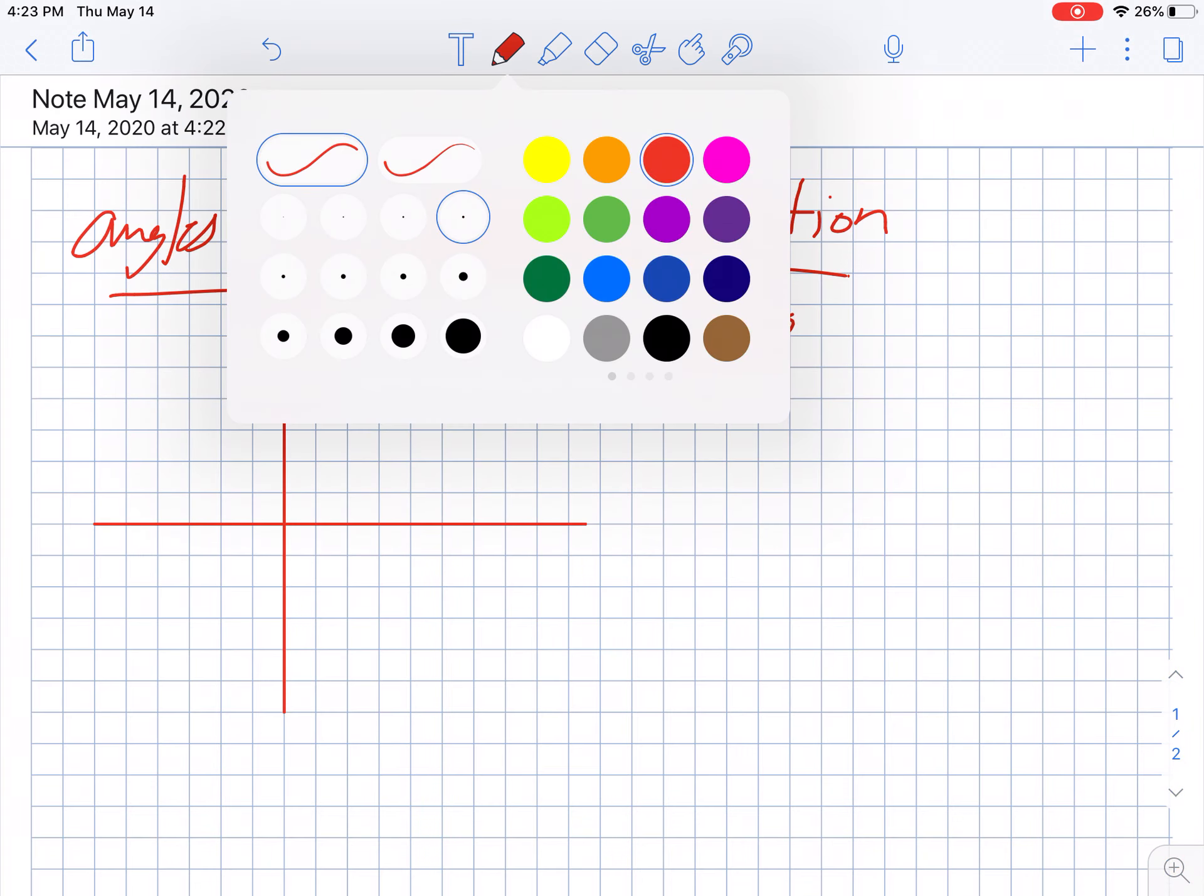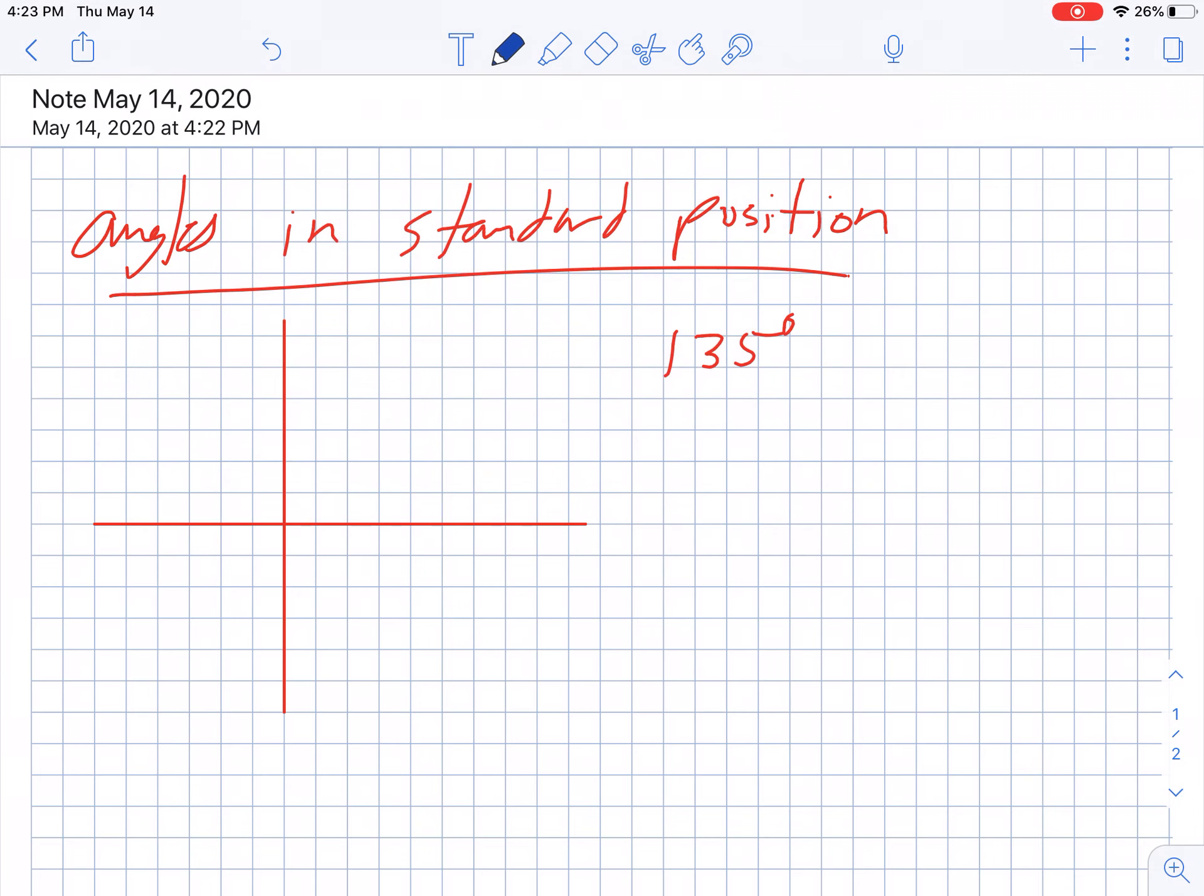Okay, so you draw your terminal side, but then you want to draw your curve and you need to put an arrowhead indicating the direction, and then you also need to label the angle like that. So I'm seeing some of you that are drawing this part but you aren't putting the arrowhead on it.